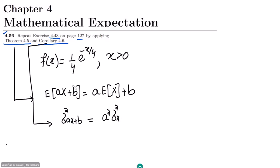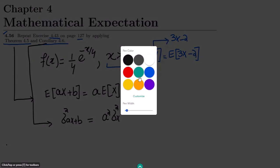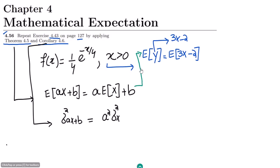So these are the two things we have to remember. According to our previous question, we had to find the expected value of Y, where Y was basically 3X − 2. Therefore we need to find E[3X − 2], which by the theorem equals 3·E[X] − 2. Let me call this equation A.